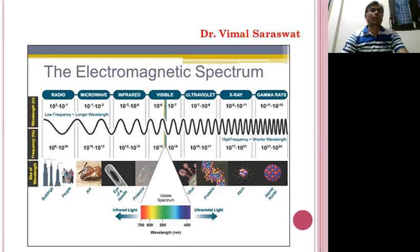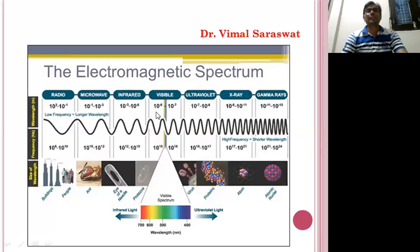Wavelength ranges from 10 raised to power 3 to 10 raised to power minus 1 meters for radio waves. Frequency ranges from 10 raised to power 6 to 10 raised to power 10 Hz for microwaves. Next is infrared, then the visible range, followed by ultraviolet waves, then X-rays, and finally gamma rays. So this shows the full wavelength range, frequency range, and size scale of the electromagnetic spectrum.